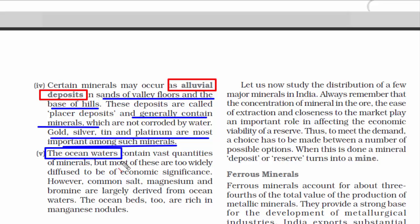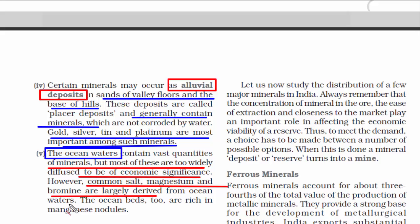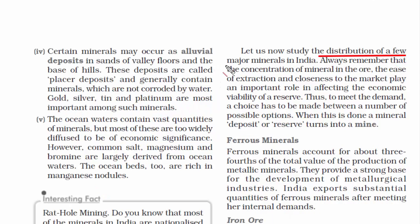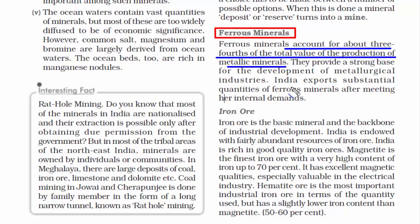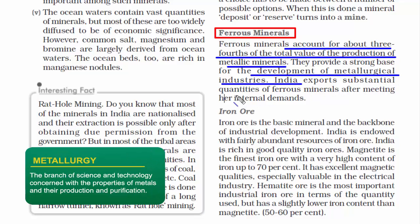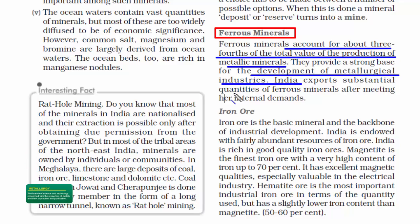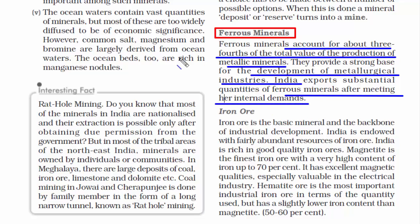The last place where you will find minerals is ocean water. It contains vast quantities of minerals, but they are too scattered to be used for any economic purpose. Common salt, magnesium, and bromine are extracted from ocean water. Now we will read about the distribution of major minerals in India. The first is ferrous minerals, which account for about three-fourths of the total value of production of metallic minerals, and are essential for the development of metallurgical industries.